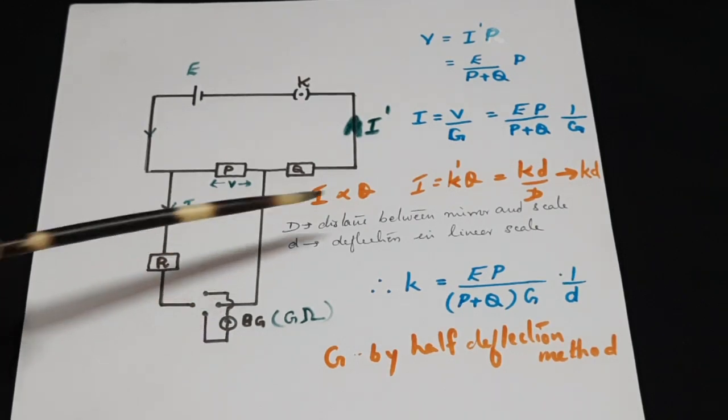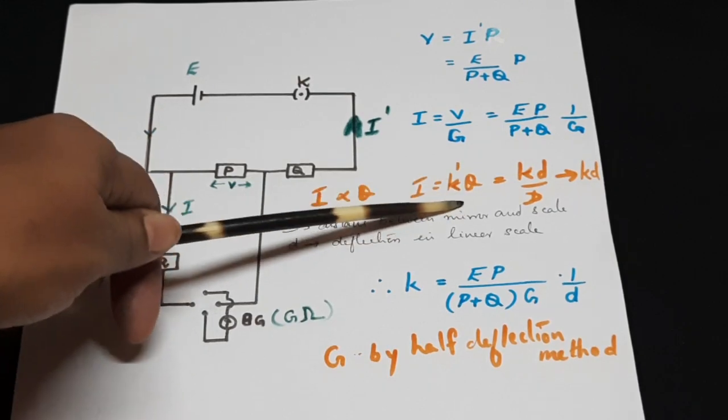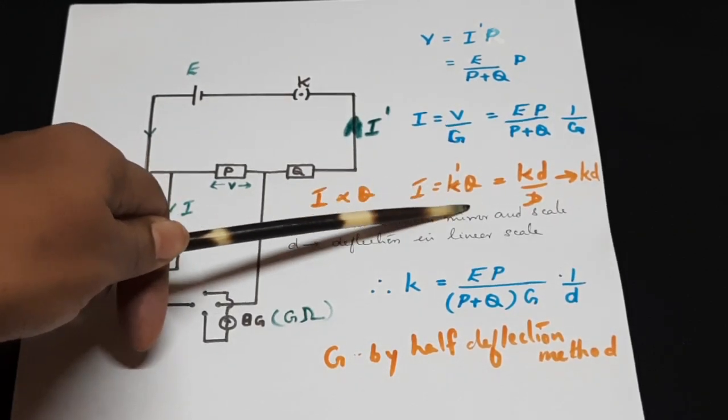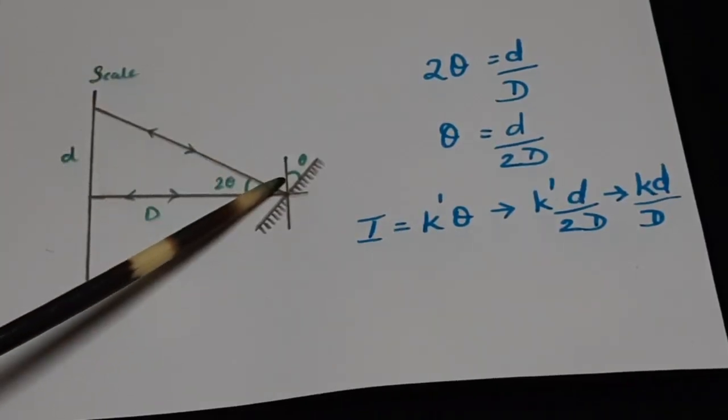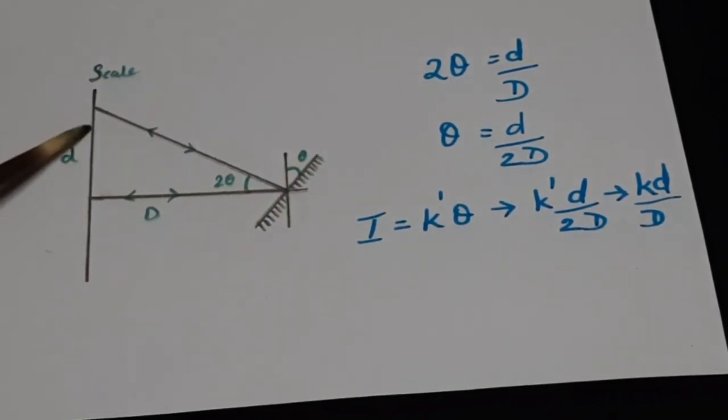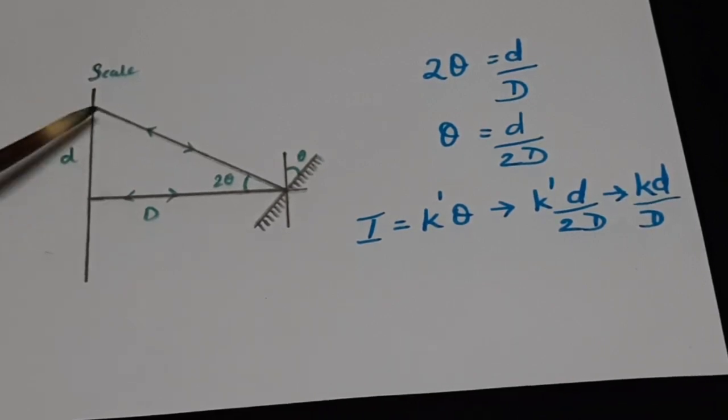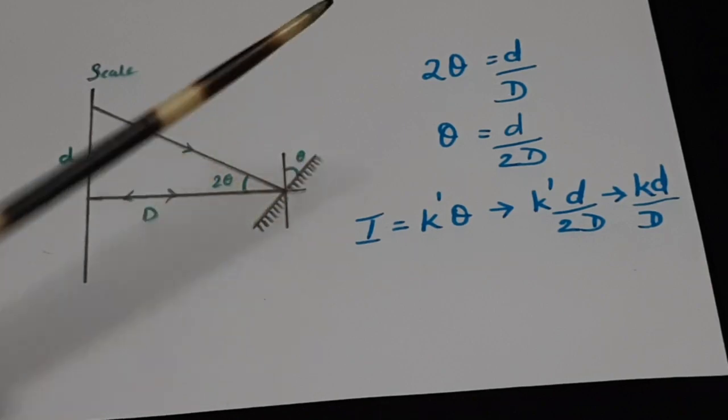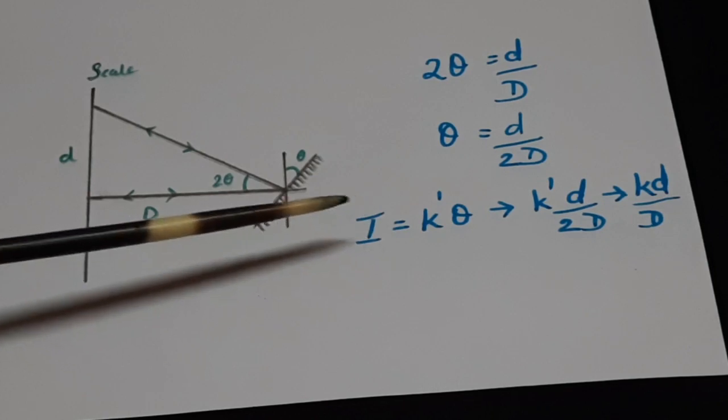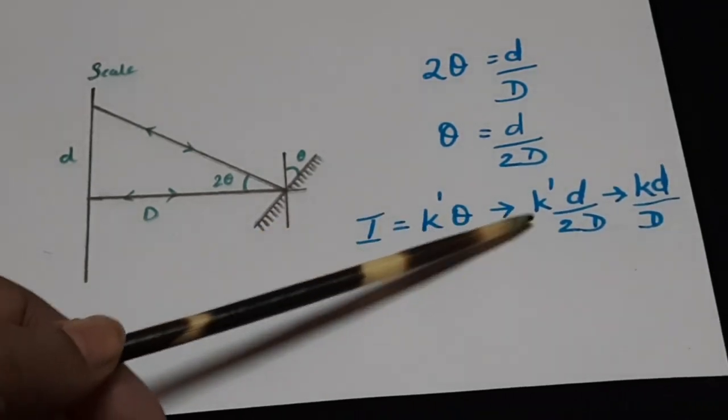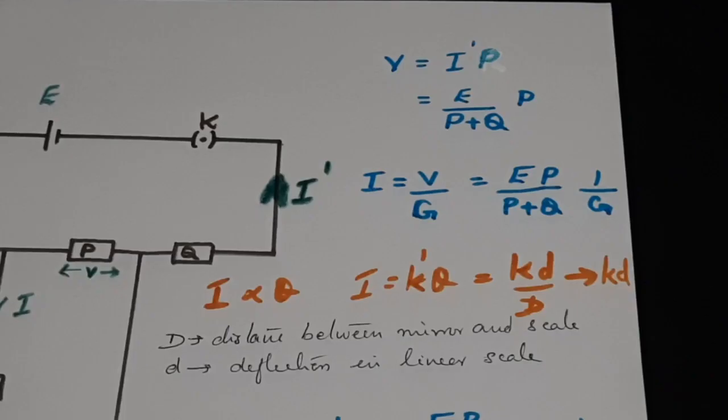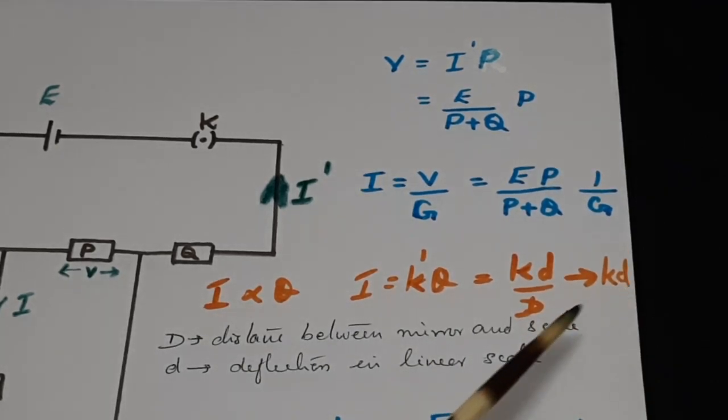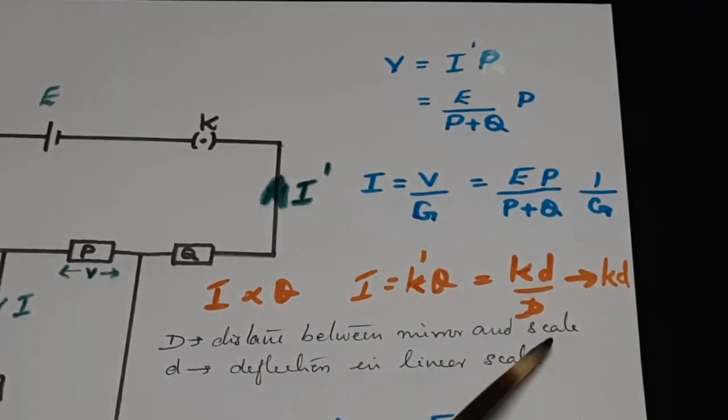The current flowing through a BG produces a deflection theta or I is equal to K dash theta where K dash is a reduction factor. This angular theta can be made into a linear displacement on the scale. If a deflection of theta degree for the BG mirror produces a linear displacement of small d centimeters on a linear scale placed at distance capital D from the mirror, then we can write 2 theta is equal to D by D or finally current I is equal to K dash theta is equal to K D by D. Using that relation, we can write I is equal to K D by D is equal to K D if you choose your D, the distance between the mirror and scale, as 1 meter.